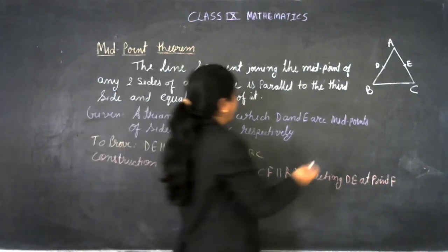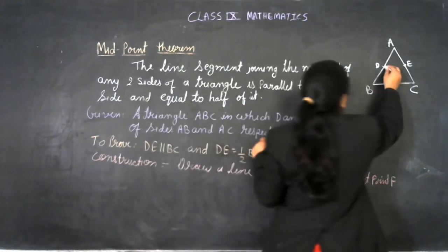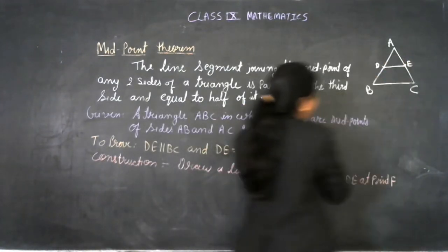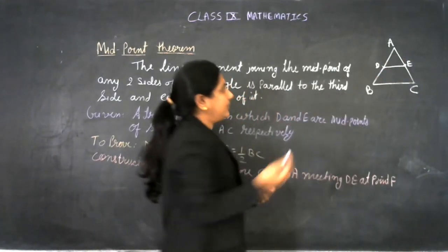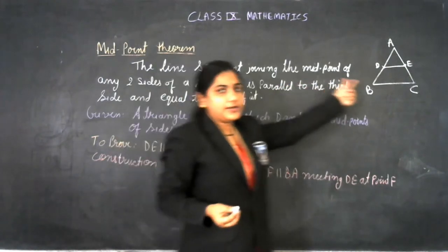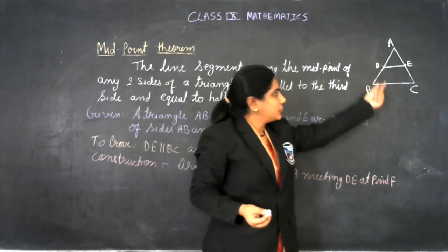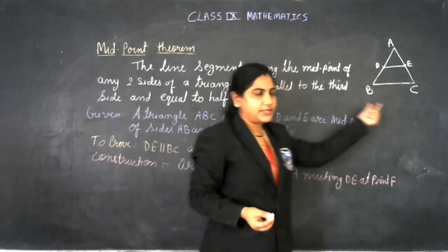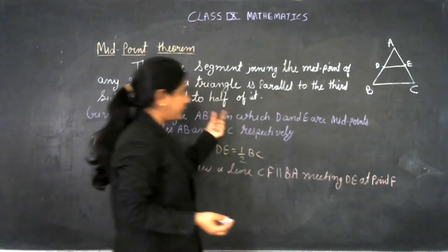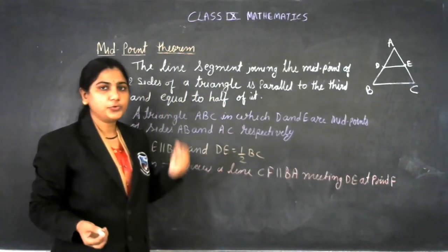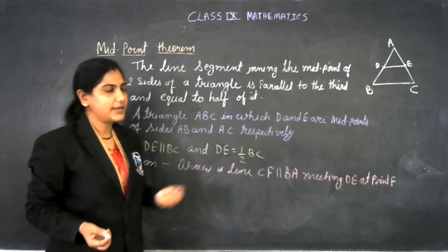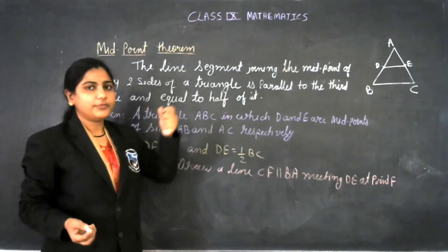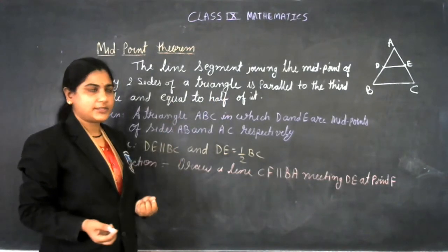So this midpoint line segment is parallel to BC. If I join D and E, then DE is parallel to BC. We have to prove that DE is parallel to BC and DE equals half of BC.